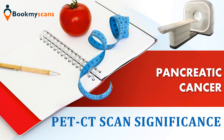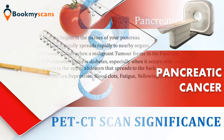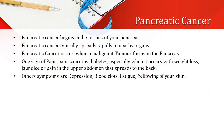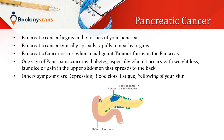Hello everyone, welcome to Book My Scans. Let us get to know the significance of PET CT scan in pancreatic cancer treatment. Pancreatic cancer begins in the tissues of the pancreas and typically spreads rapidly to nearby organs. It occurs when a malignant tumor forms in the pancreas. One sign of pancreatic cancer is diabetes, especially when it occurs with weight loss, jaundice, or pain in the upper abdomen that spreads to the back. Other symptoms include depression, blood clots, fatigue, and yellowing of the skin.